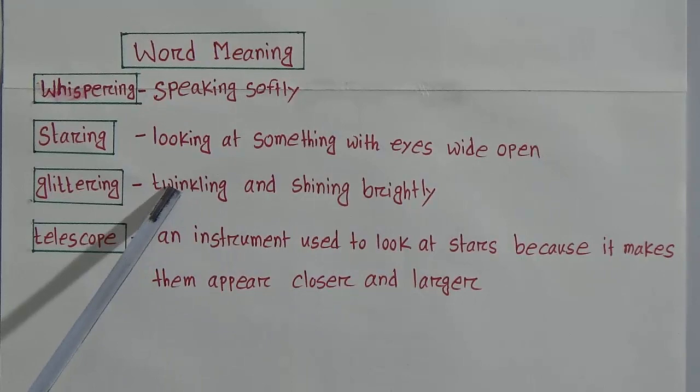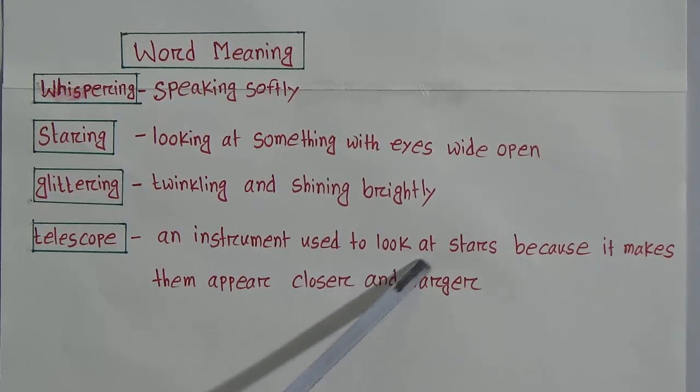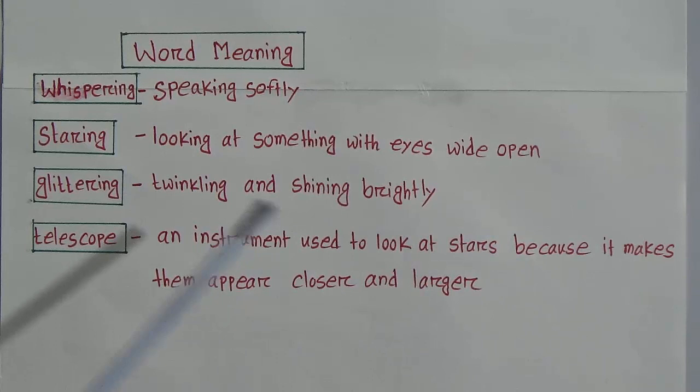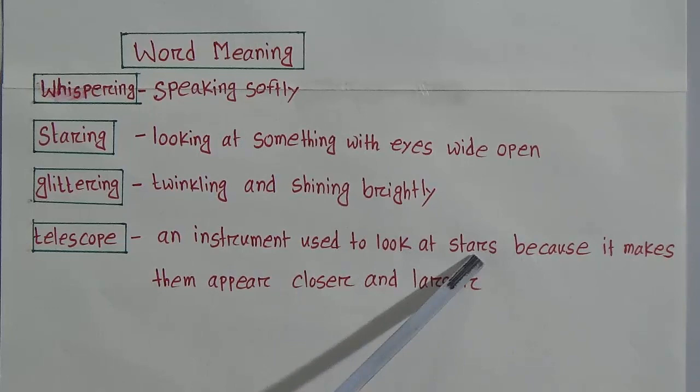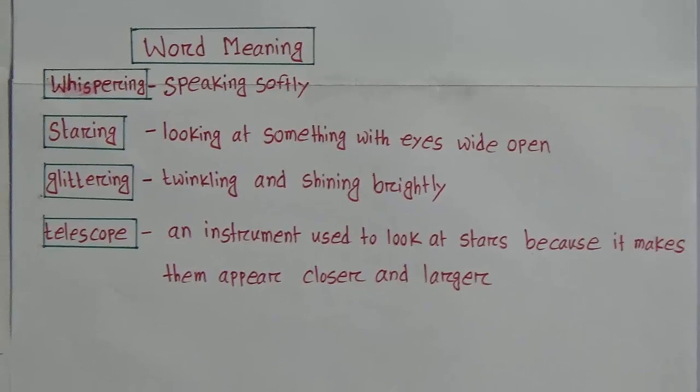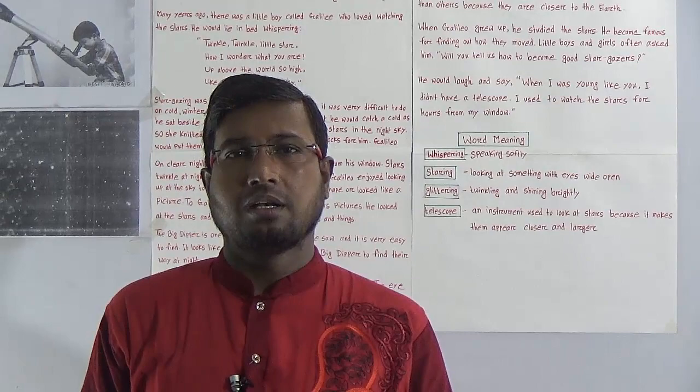The next word is: glittering — twinkling and shining brightly. And: telescope — an instrument used to look at the stars because it makes them appear closer and larger.